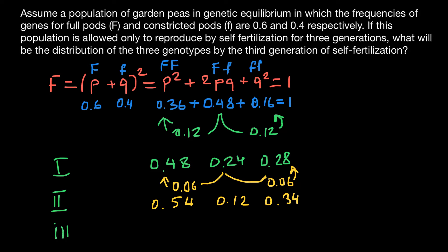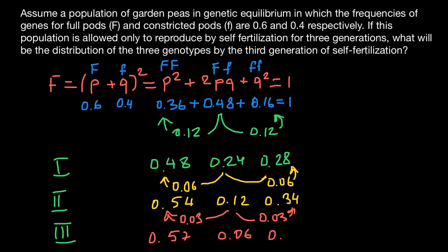In Generation 3, again after self-fertilization we get 50% loss of heterozygosity, giving 0.06, which is redistributed as 0.03 to each homozygote. The new frequencies in the third generation are: homozygous dominant 0.57, heterozygous 0.06, and homozygous recessive 0.37.